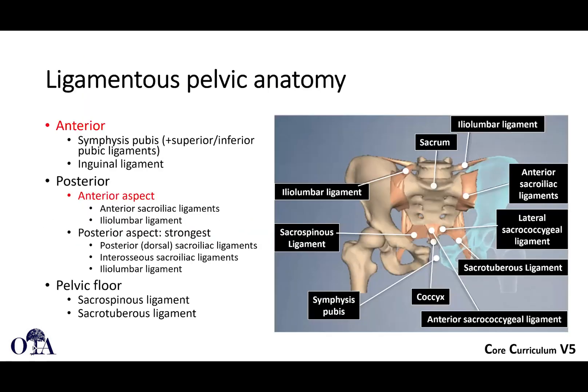Ligamentous anatomy is what holds the pelvis together. Many injuries involve ligament disruptions in the pelvis — for instance, APC patterns involve significant ligament disruptions, and sometimes you don't have a fracture but you have an unstable pelvis. Anteriorly you have the pubic symphysis and the inguinal ligament. Posteriorly you have the anterior SI ligaments and the iliolumbar ligament. With certain unstable pelvic fractures, you'll see an avulsion of the L5 transverse process as a result of avulsion of the iliolumbar ligament.